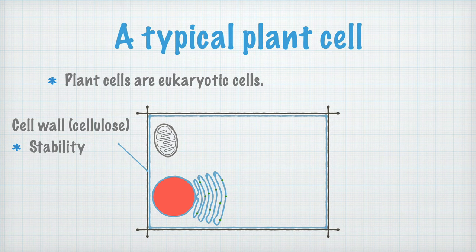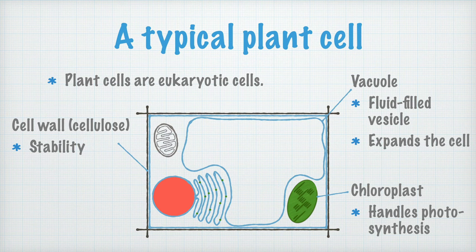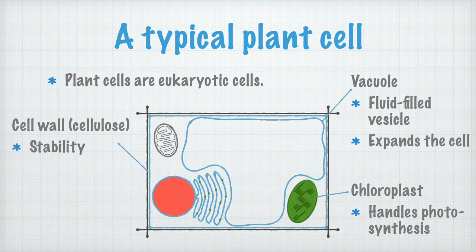Plant cells may also contain organelles that look something like this — this is a so-called chloroplast, and that's where the photosynthesis takes place. In a lot of plant cells, there's also something called a vacuole — a membrane-enclosed compartment filled with a watery fluid. The vacuole expands like a balloon and keeps the cell stretched out. If, for example, a potted plant has gone without water for a few days, it wilts because the vacuoles shrink. But when water is available again, the vacuoles take up water and expand, stretching out the cell and eventually the whole plant.